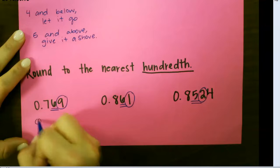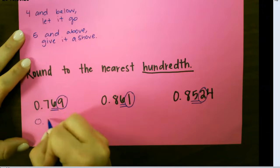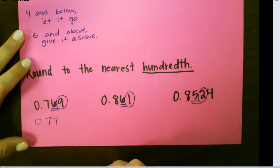So on this first one, the 9 is above 5, so I'm going to round this up to 0 and 77 hundredths.